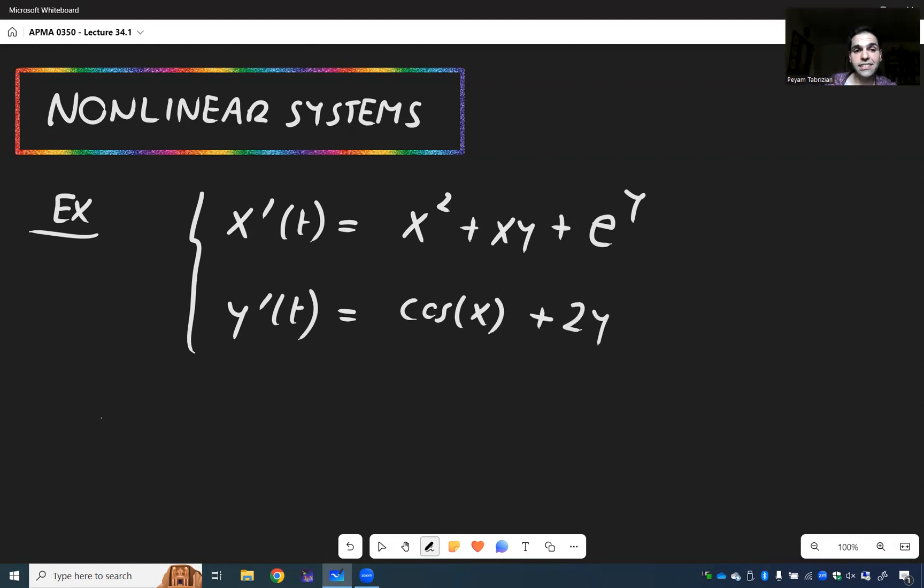Where here again, x and y are two functions of time: x equals x of t and y equals y of t. So before they were coupled linearly, but now here we have a very nonlinear interaction.